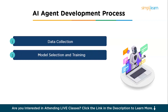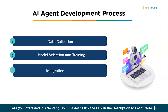Next is model selection and training. The model you select depends on the type of AI agent you're building. For conversational AI, you might use a pre-trained language model like GPT; for recommendation systems, collaborative filtering, content-based filtering, or deep learning models might be used. The model is then trained on your data through supervised learning to learn patterns. Once trained, the agent needs to be integrated with existing systems such as CRM systems, communication platforms, or enterprise tools.